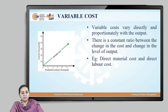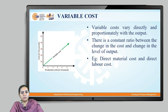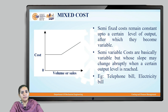Variable cost is the cost which varies directly and proportionately with the output of production. There is always a constant ratio between the change in cost and the change in the level of output. Direct material cost and direct labor cost are examples of variable cost.